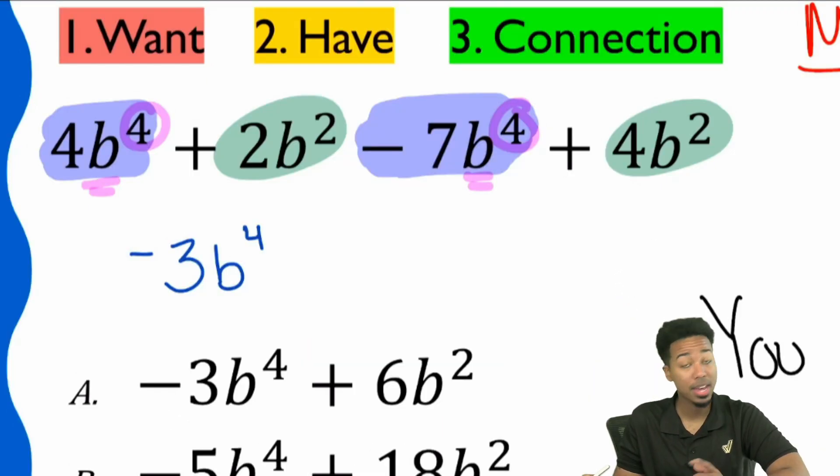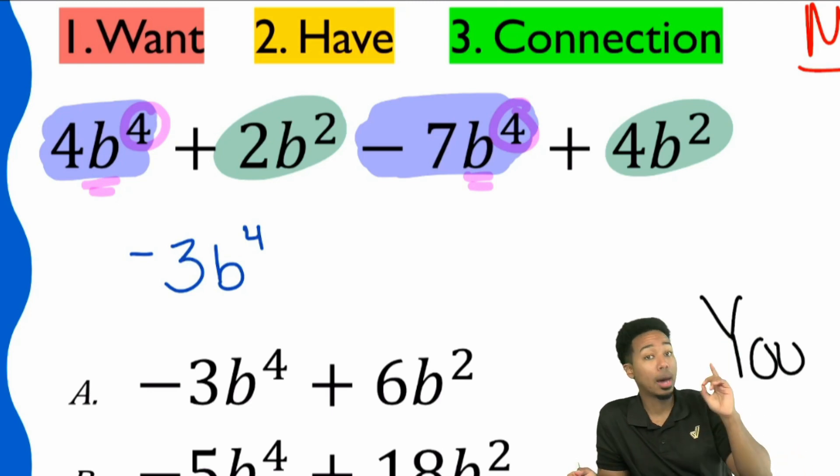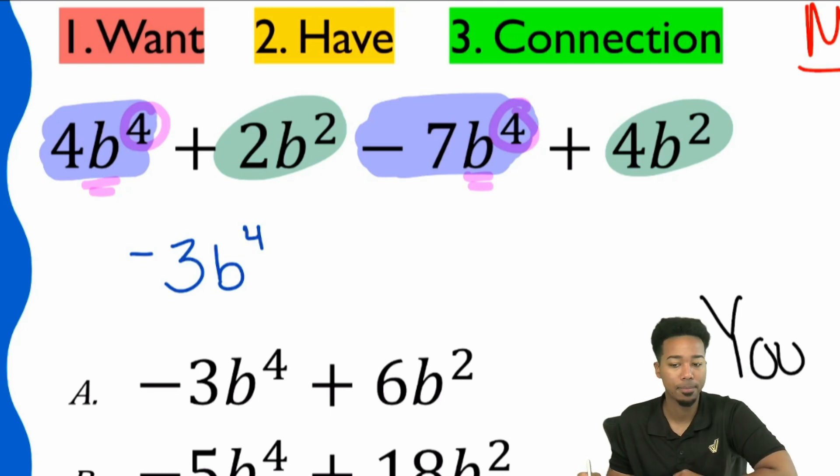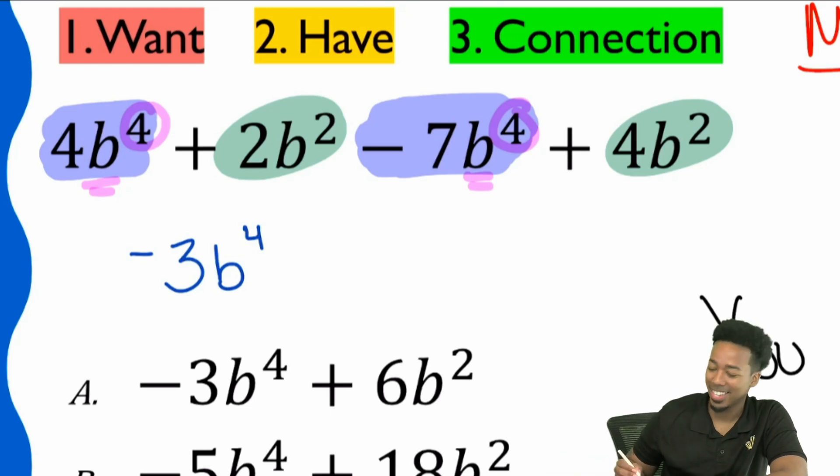And then from there, if we're looking at the green highlight for the other like terms, we have a positive 2 B squared, and then we have a positive 4 B squared. If we add those two together, if we combine those like terms, what do we got? 6 what? 6 what? 6 B what? Yeah, 6 B squared.